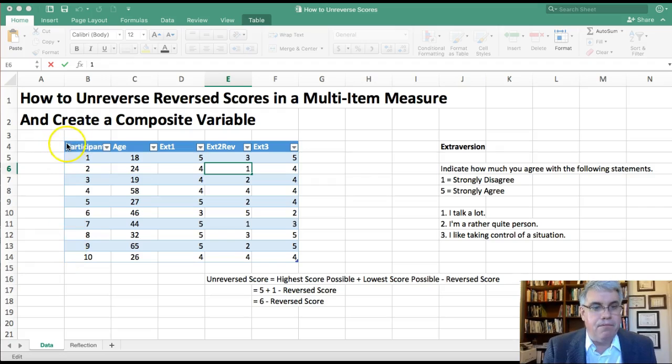Here we have one column where we've got the participant number, we've got their age, and then we have data on three questions concerning extroversion. So this would be some type of scale measuring extroversion, and it's measured on a Likert scale. The directions are: indicate how much you agree with the following statements, where one is strongly disagree, that's not at all you, and five is strongly agree. And then we just have three simple statements. I talk a lot, so if you strongly disagree with that you're probably not very extroverted, and if you strongly agree you're probably more extroverted.